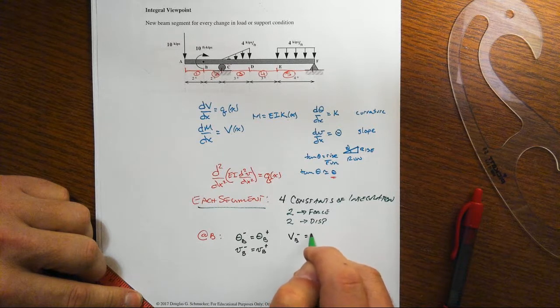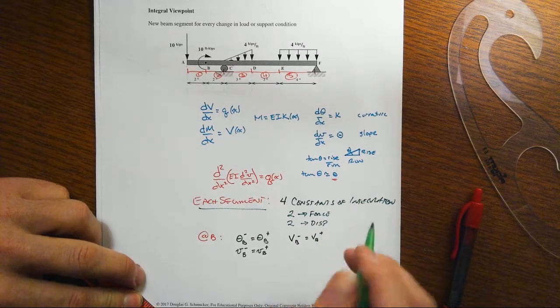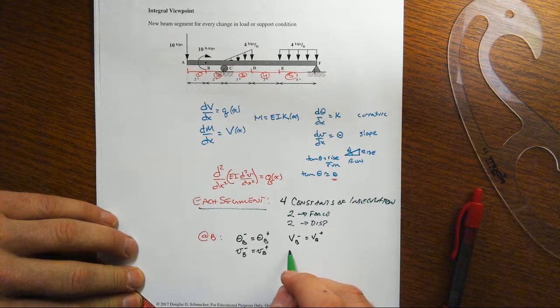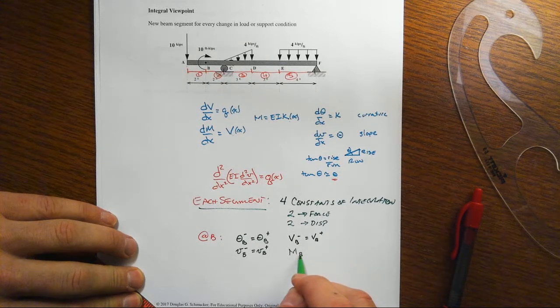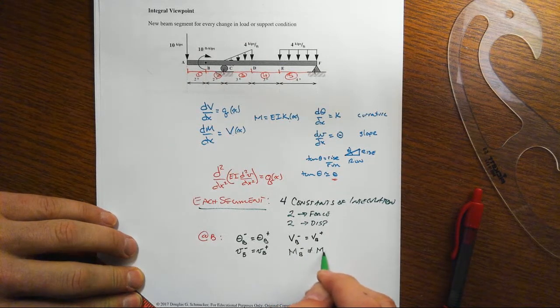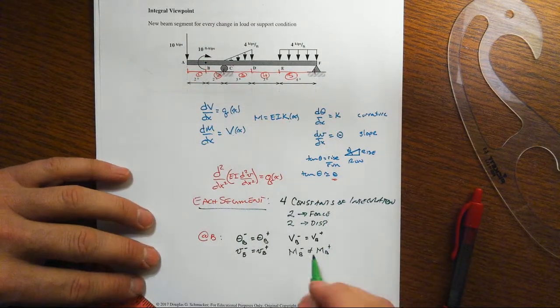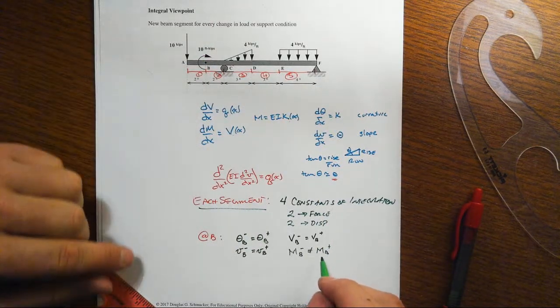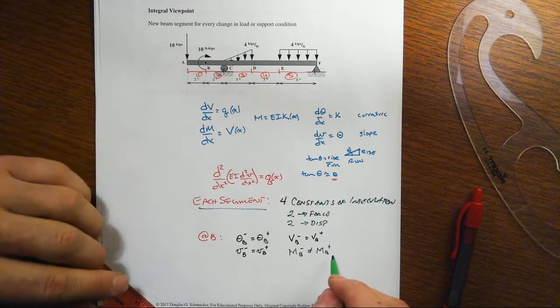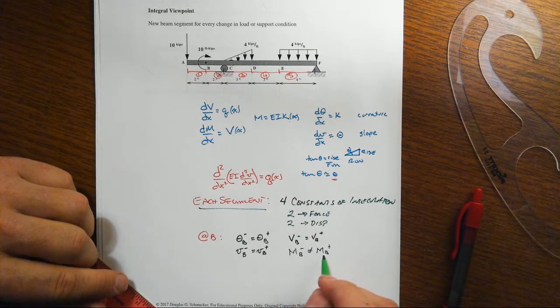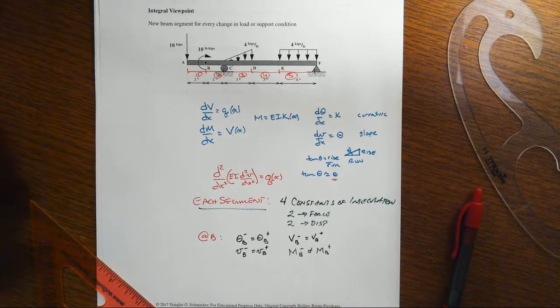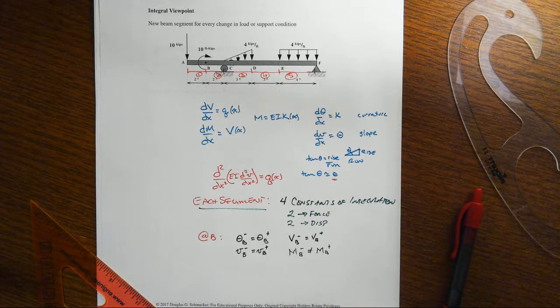The shear just to the left and to the right of B is going to be the same. However, that won't be true of the bending moment. They're going to not be the same to the left and right because of that ten kip foot that's applied right there. And you have to figure out, is that a plus or a minus ten kip foot that's the difference between those two. And we'll address that in another little video segment.